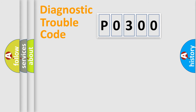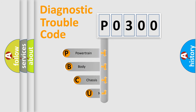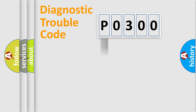First, let's look at the history of diagnostic fault code composition according to the OBD2 protocol, which is unified for all automakers since 2000. We divide the electric system of an automobile into four basic units: Powertrain, Body, Chassis, and Network.